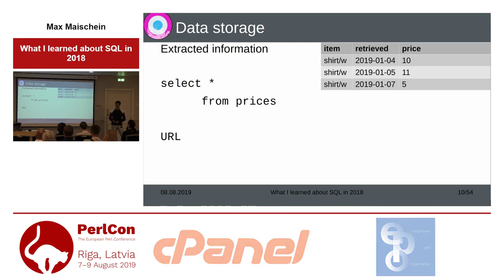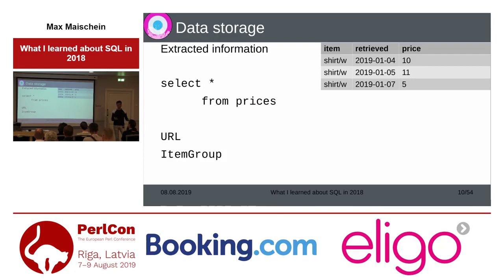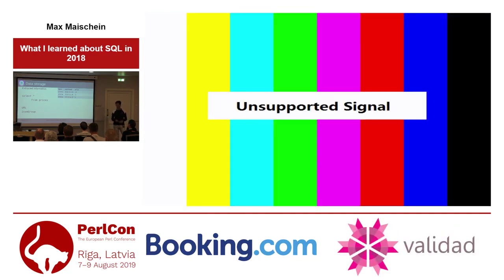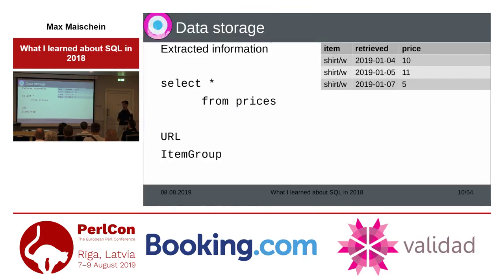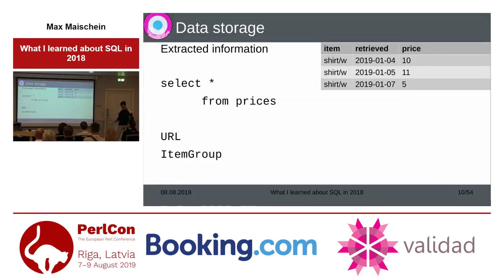I also store some other columns of interest for later processing but not for the price calculations, like the URL where I fetched the information from and the item group. For example, if I have two kinds of white shirts on two different websites, I may want to throw them into the same category of white shirt even though they are different items — or maybe I'm interested in a colored shirt but don't care if it's red or blue.